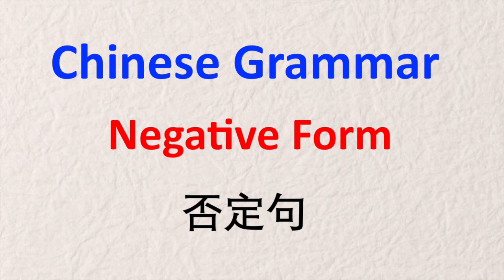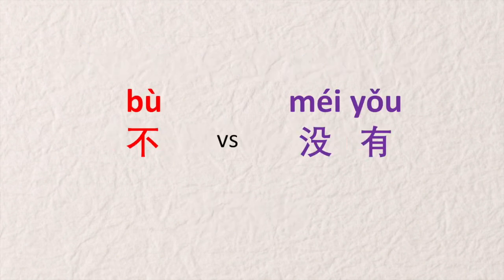Hello, 大家好, welcome back. In this video, we'll talk about how to make negative sentences in Chinese. Chinese use different forms for negative action. Today, we'll learn two negation words 不 and 没有, and compare the difference between these two words.